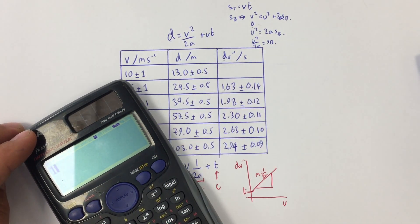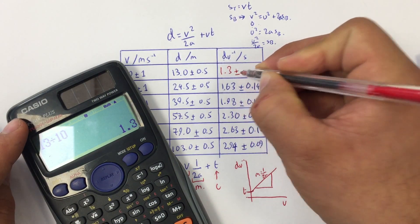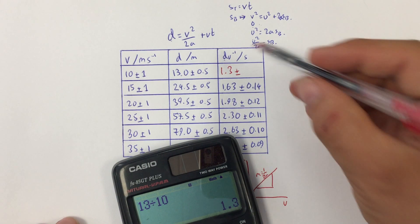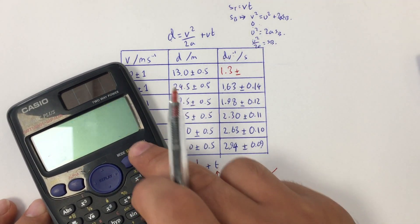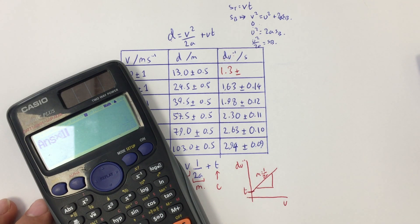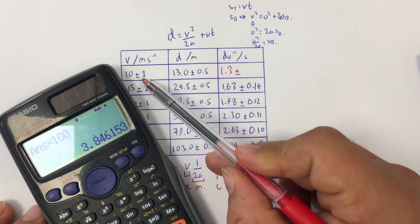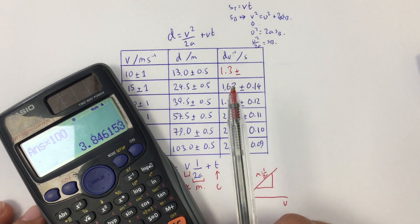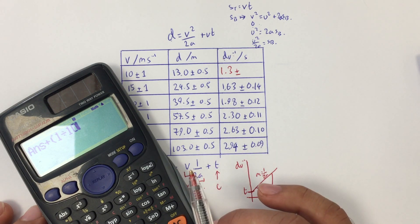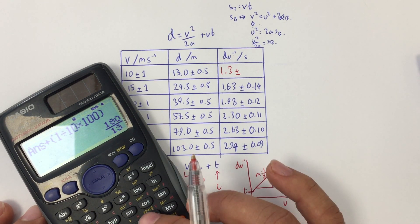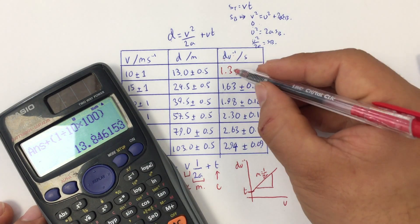So we're going to do d divided by v: 13 divided by 10 gives 1.3. We also want the absolute uncertainty. Since we've done d divided by v, I need the percentage uncertainty in each and add them together. We have 0.5 divided by 13 times 100, giving a percentage uncertainty in d of 3.84%. The percentage uncertainty in v is 1 divided by 10 times 100, which is 10%. So we end up with 13.84% as our percentage uncertainty in d·v⁻¹.